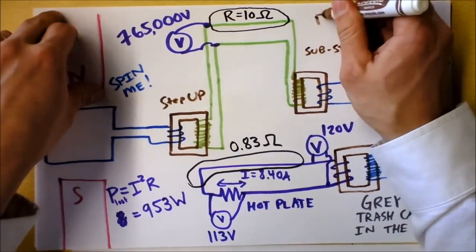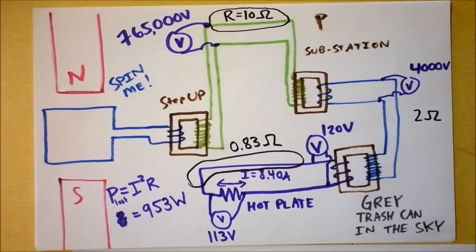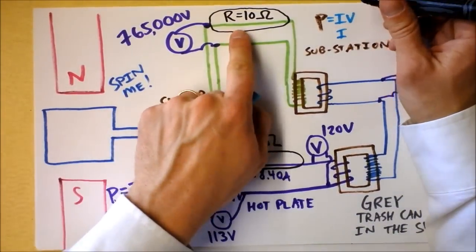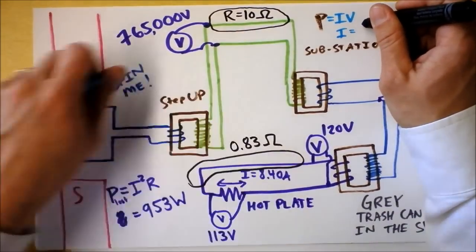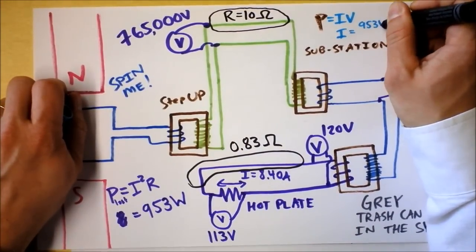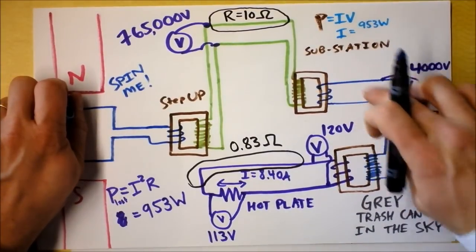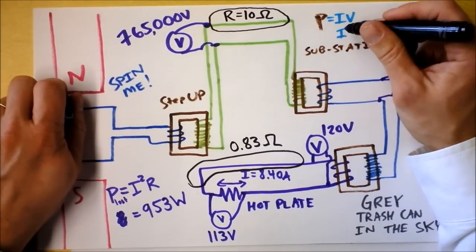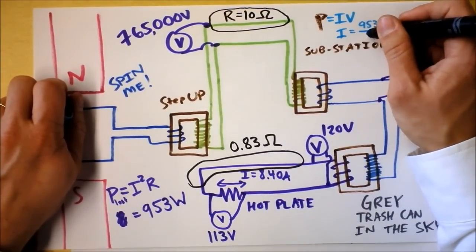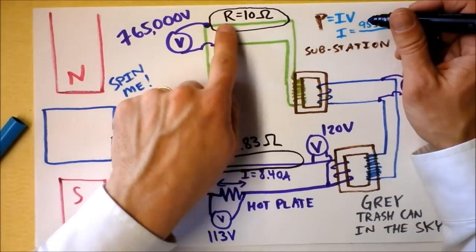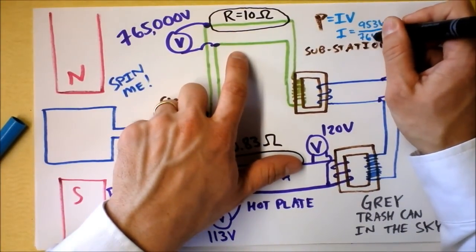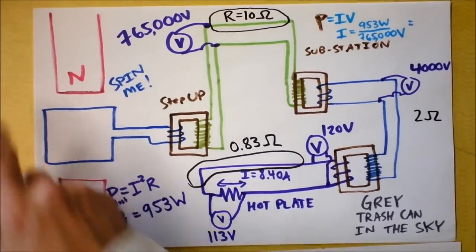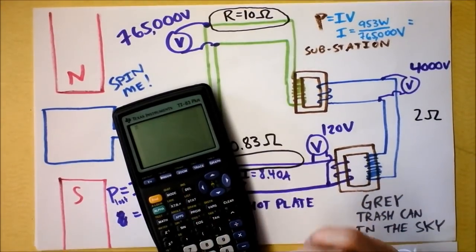If I do a little bit of calculation, power is current times voltage. So I'm going to try to find the current through this wire. That current is going to be the power, which is 953 watts, divided by the voltage of the line. And that's 765,000 volts. I'm supposed to take that 953 divided by 765,000. Oh my gosh, that's not a lot of current. I have got 1 milliamp going through this high voltage distribution line.